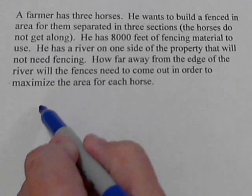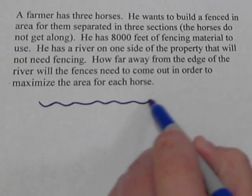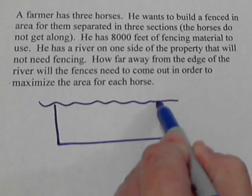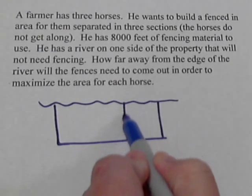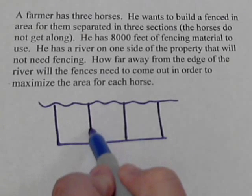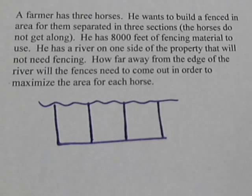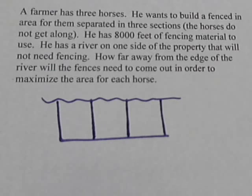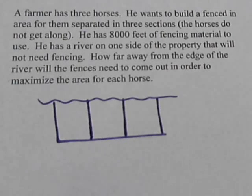So let's draw a sketch of what we got. Here's the river and what we want to do is we want to draw a rectangular area that's broken into three sections. And we want to make this as big as possible so the horses have the most possible area to move around in.